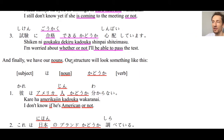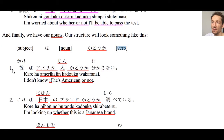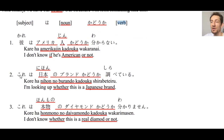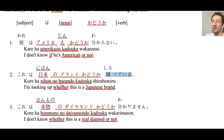Finally, let's look at nouns. The structure is: subject は + noun + かどうか + verb. Number one: 彼はアメリカ人かどうかわからない — I don't know if he is American or not. Number two: これは日本のブランドかどうか調べている — I'm looking up (調べる) whether this is a Japanese brand or not. 調べている means 'I'm researching/looking it up.'